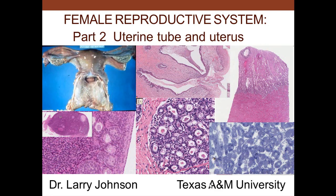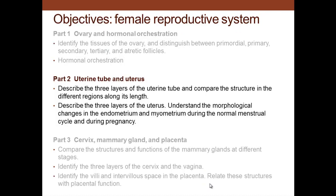Female reproductive system, part two: uterine tube and uterus. In part two, we want to describe the three layers of the uterine tube and compare these structures across different regions. We also want to describe the different layers of the uterus and understand the morphologic changes that occur throughout the menstrual cycle and during early pregnancy.